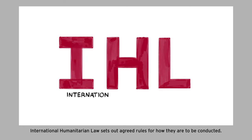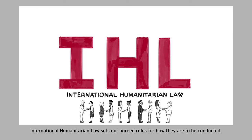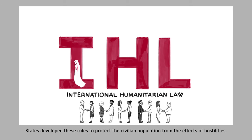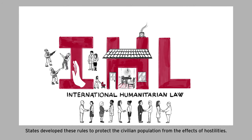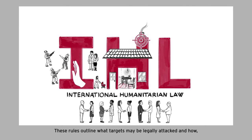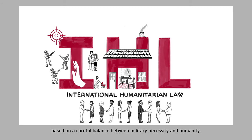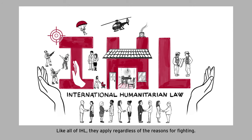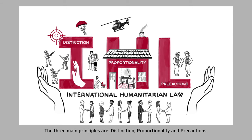When wars happen, international humanitarian law sets out agreed rules for how they are to be conducted. States develop these rules to protect the civilian population from the effects of hostilities. These rules outline what targets may be legally attacked and how, based on a careful balance between military necessity and humanity. Like all of IHL, they apply regardless of the reasons for fighting. The three main principles are distinction, proportionality, and precautions.